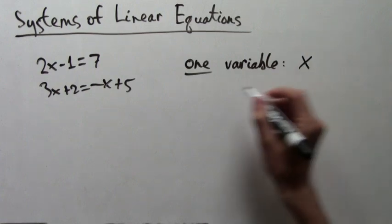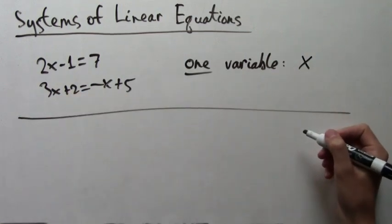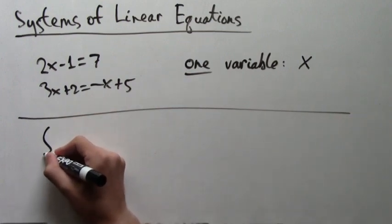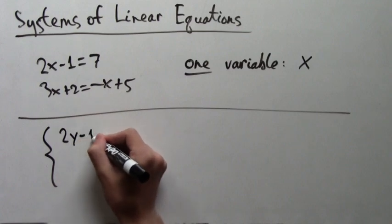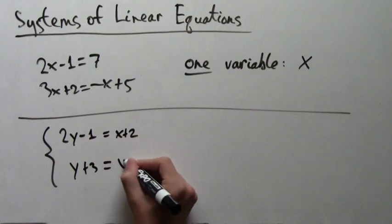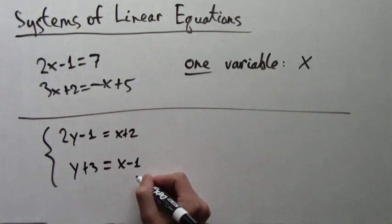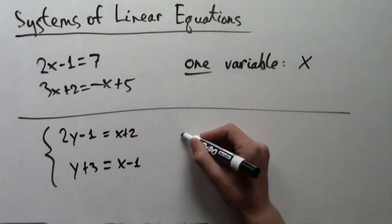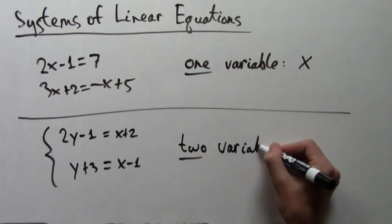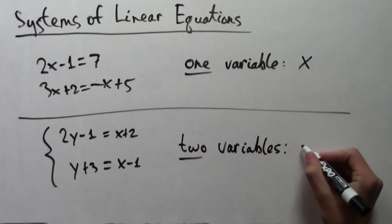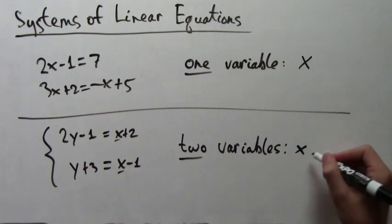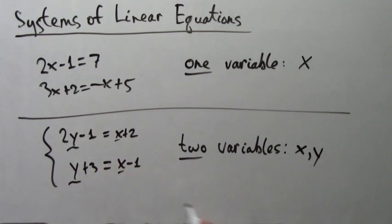A system of linear equations, instead of just having one variable, has two variables. In addition, instead of just one equation, you are given two, and both of them have to be true at the same time. So we have the variables x and y, and these two equations are linked, and the reason we know that is because of the bracket that we have put to their left. So they both have to be true at the same time, and our job is to find what x and y are.